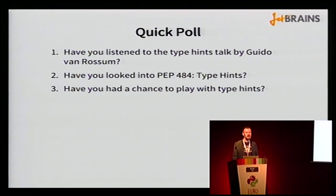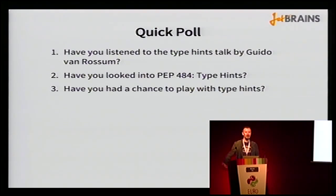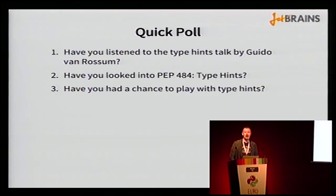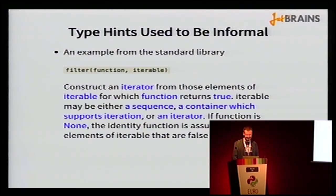Probably some of you visited the talk by Guido and Rosson earlier. Who has listened to Guido about type hints? Almost everyone. And how many of you have looked into PEP 484? About two-thirds. And have you ever had a chance to actually play with type annotations in your code? Just a couple of you — so you came to the right talk.